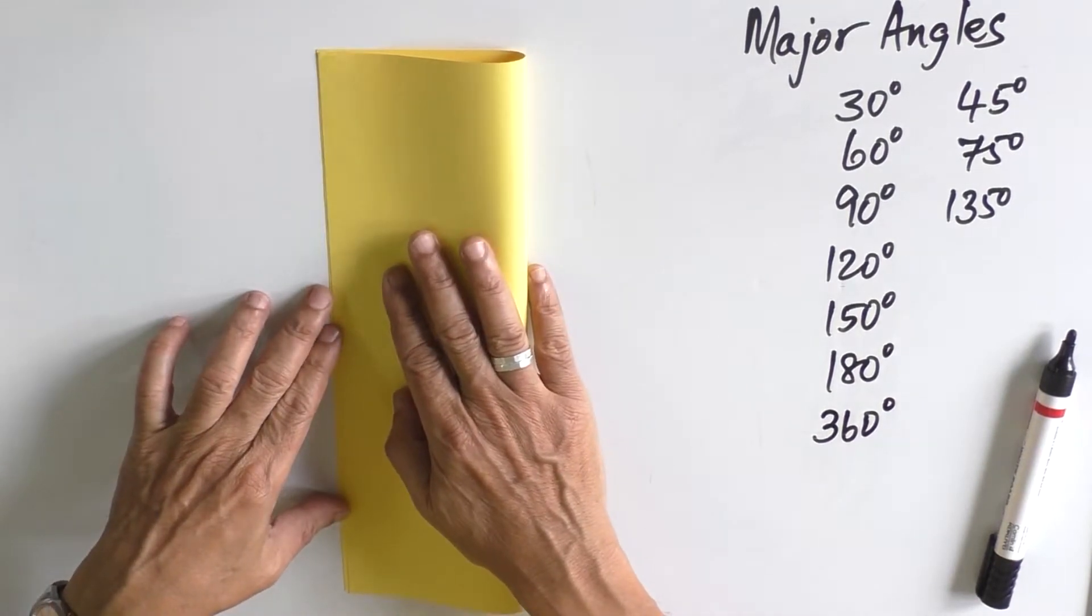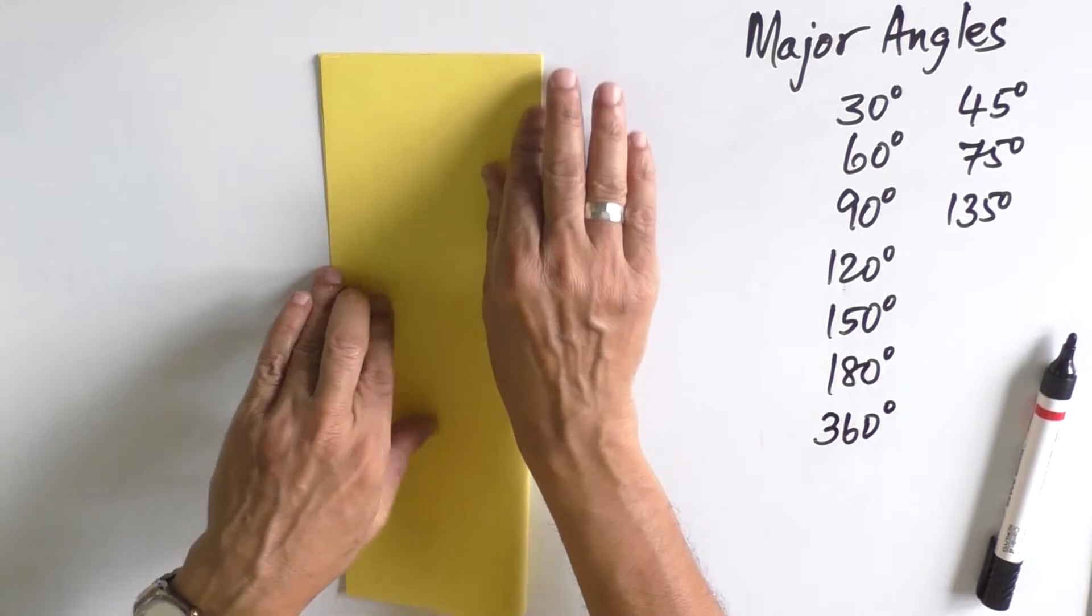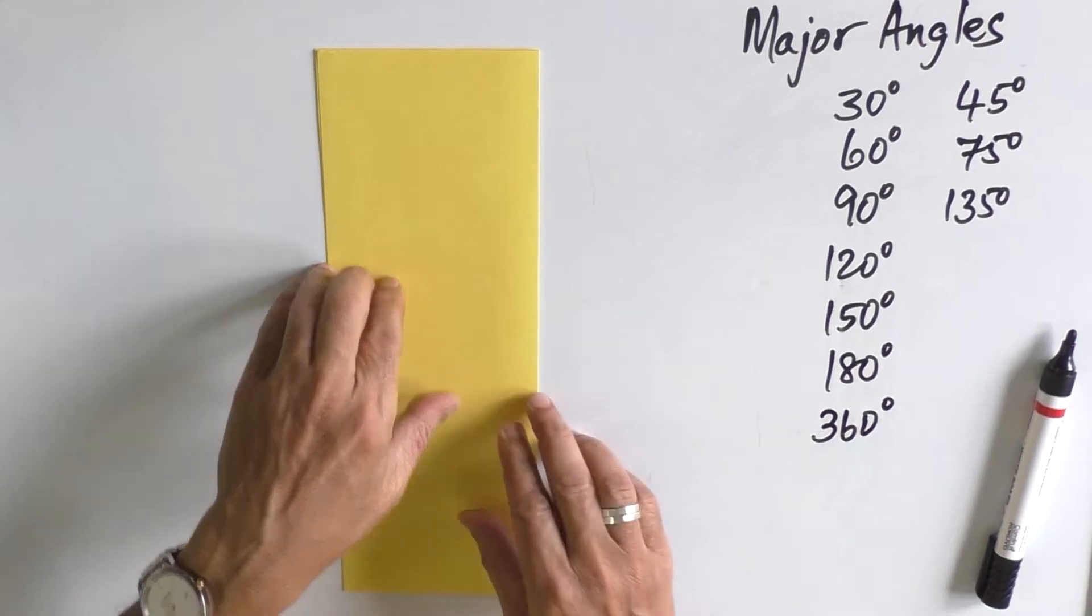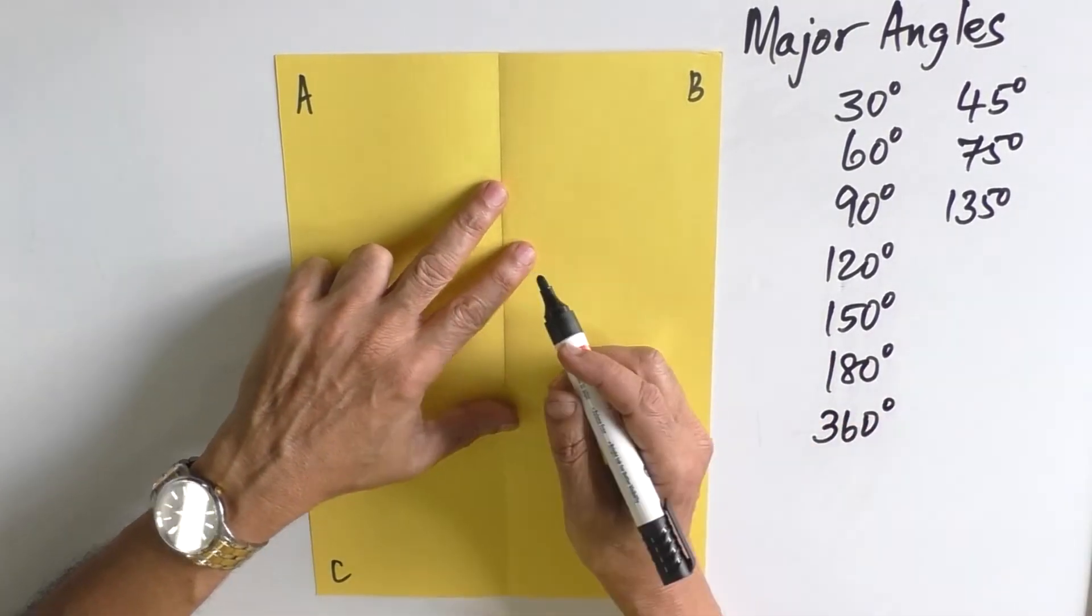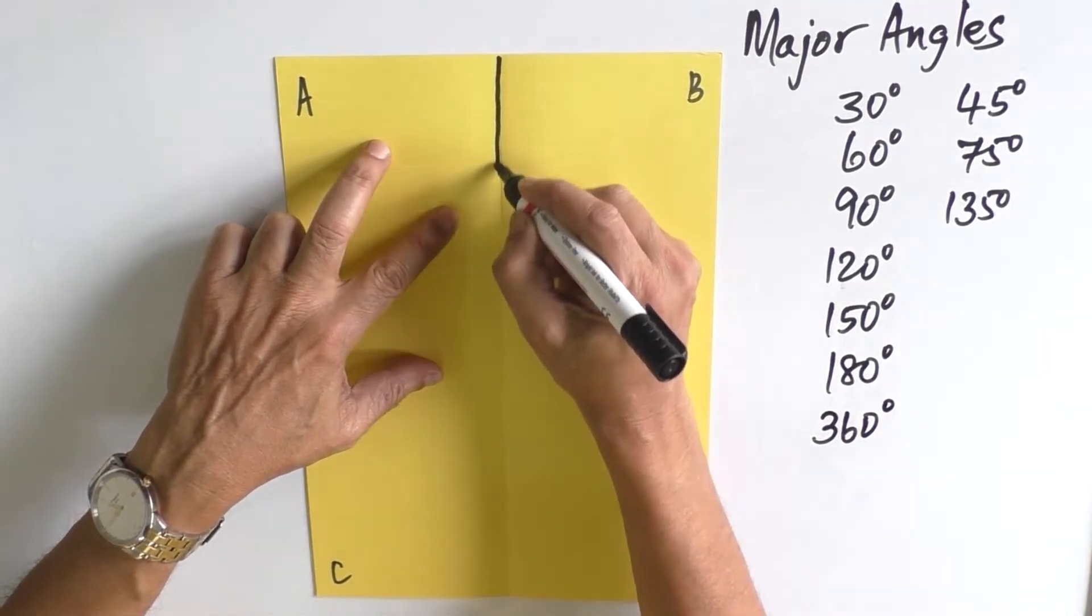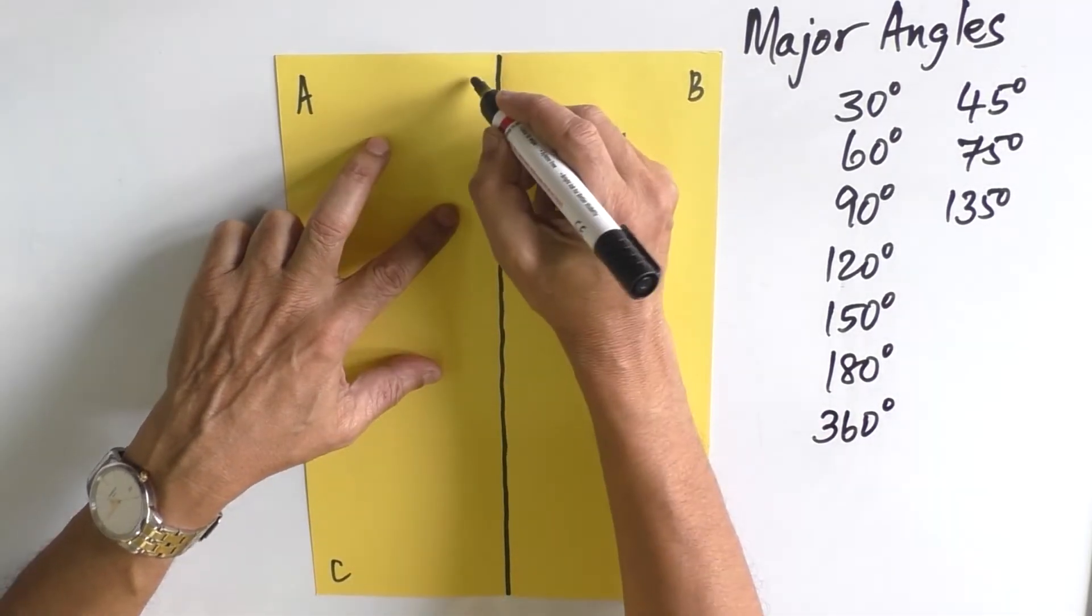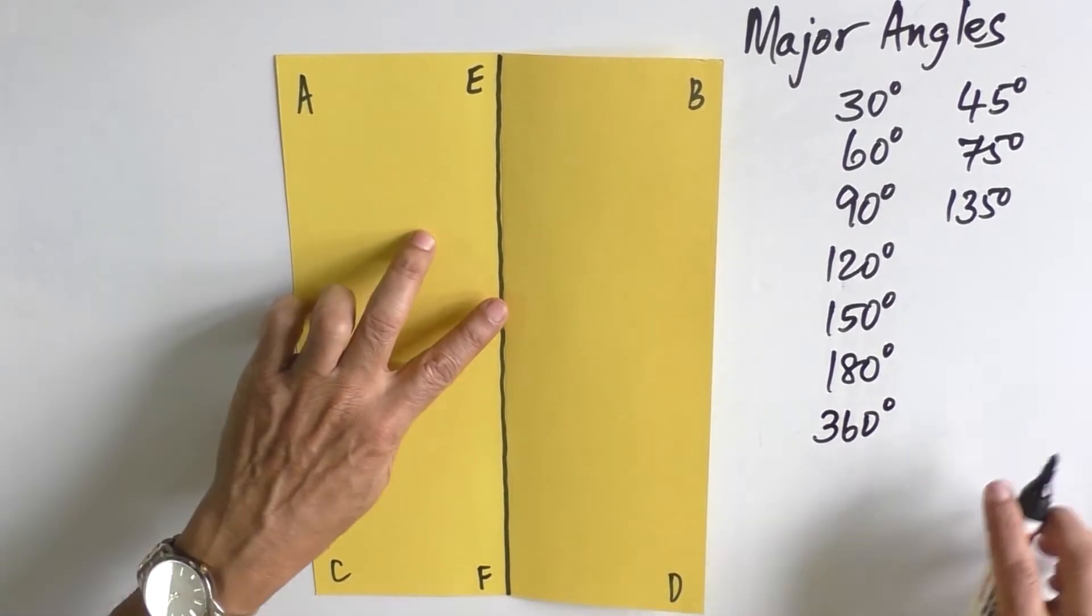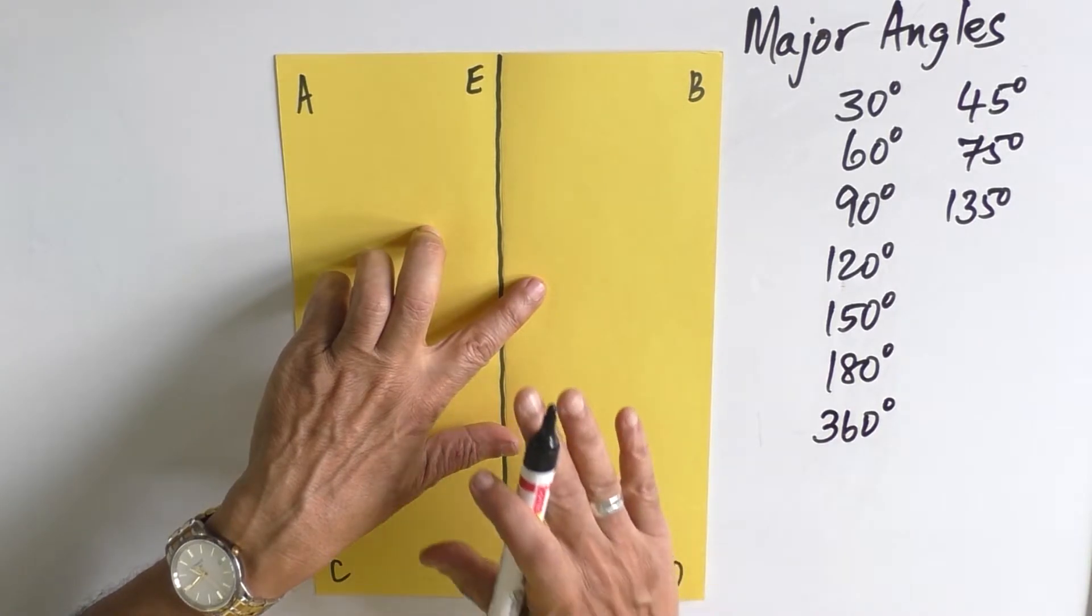and make it into two halves. Make a very strong crease. Now we have made this paper into two halves vertically. Let us draw the midline and call that E and F.